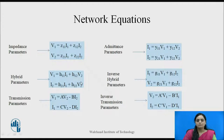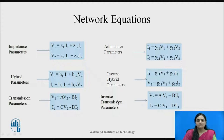All six network equations are represented here. The first represents impedance parameters, the second represents admittance parameters. The third are known as hybrid parameters, which relate input voltage and output current, while inverse hybrid parameters give the relation between input current and output voltage. Transmission parameters can be used for transmission lines, giving the relation between input voltage and current and output voltage and current. Similarly, inverse transmission parameters express output voltage and current in terms of input voltage and current.